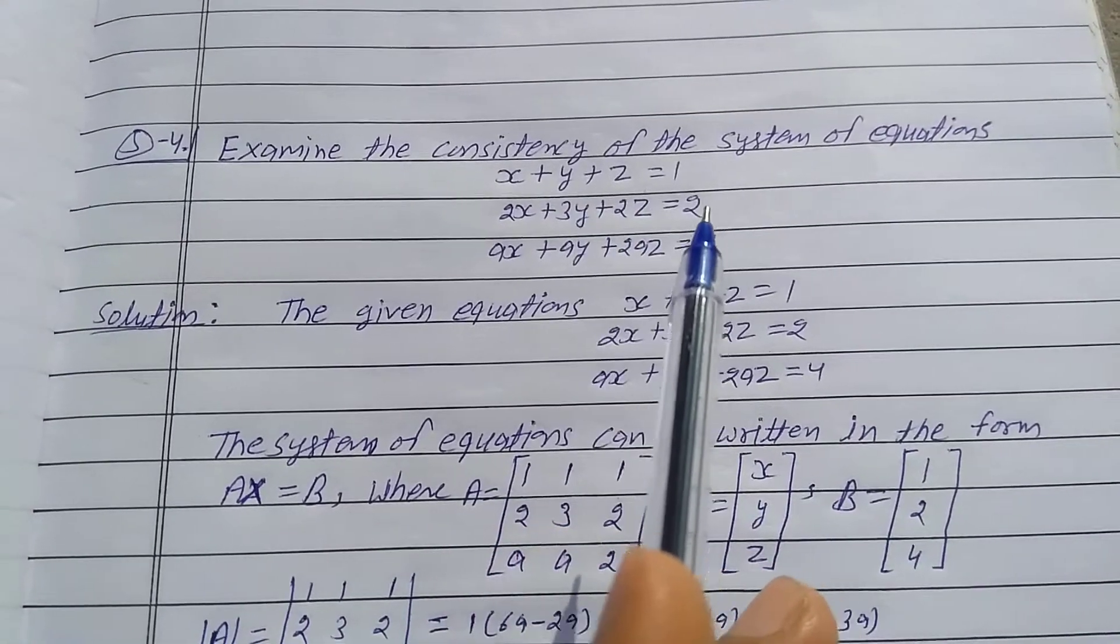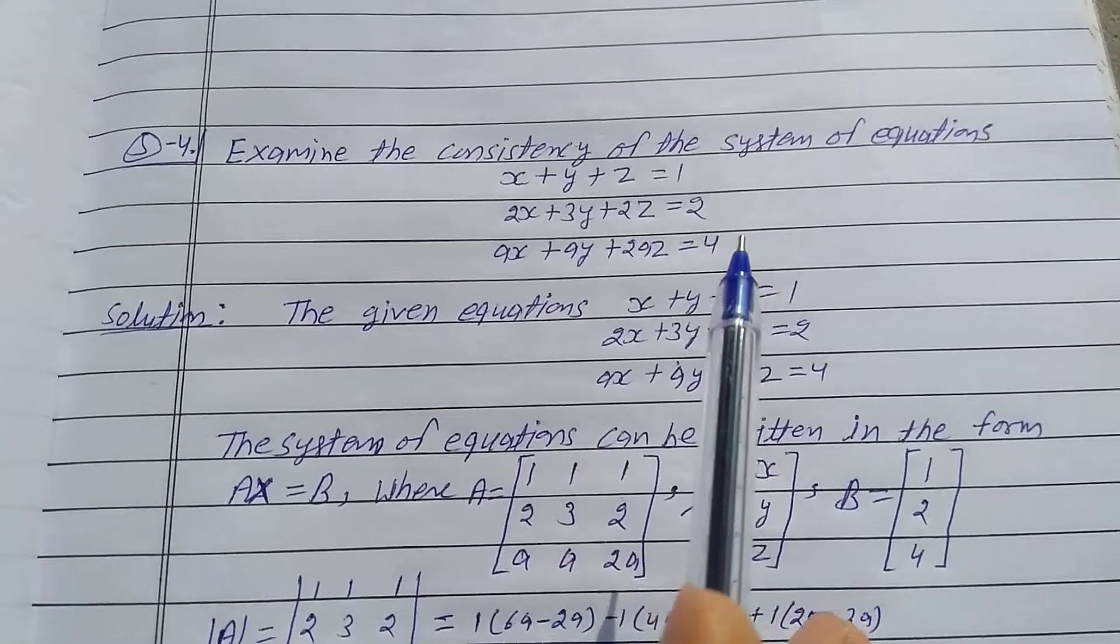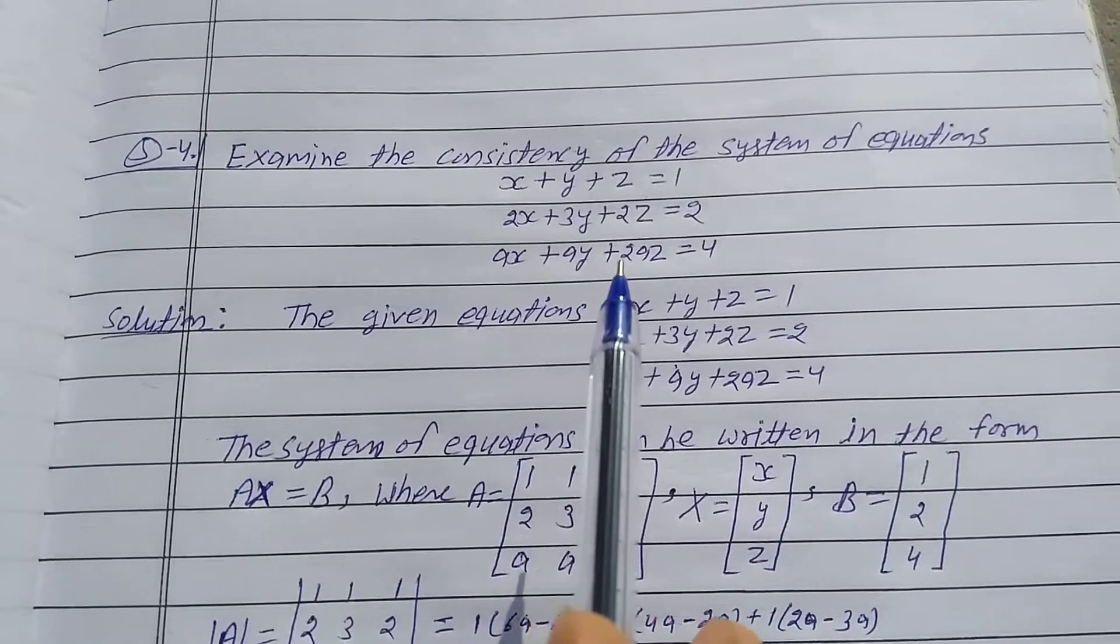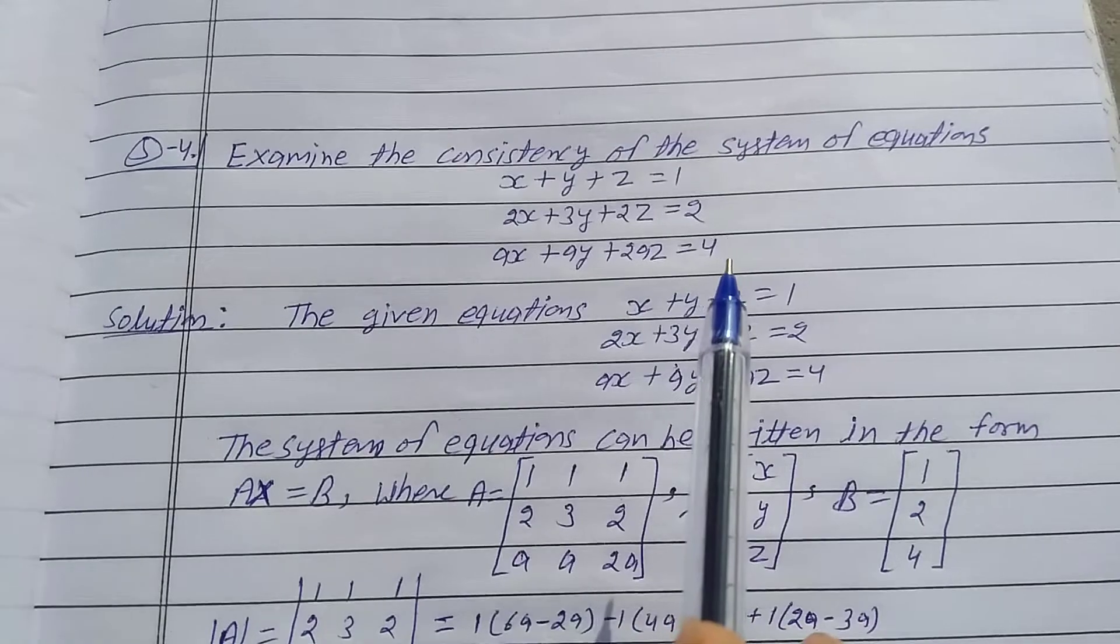x plus y plus z is equal to 1. 2x plus 3y plus 2z is equal to 2. ax plus ay plus 2az is equal to 4.